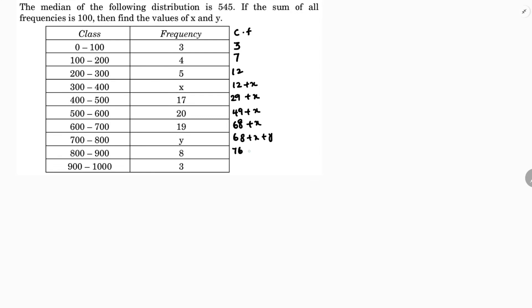76 plus 3 is 79 plus x plus y. Total frequency is 100, so n by 2 is 50. Now, since this problem has missing frequencies, we use the given answer of 545 to determine which class it falls in — clearly between 500 to 600, so that is the median class.